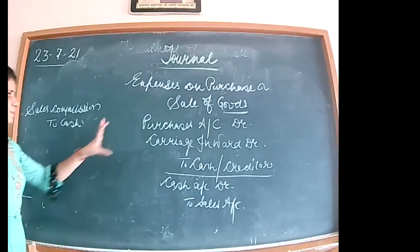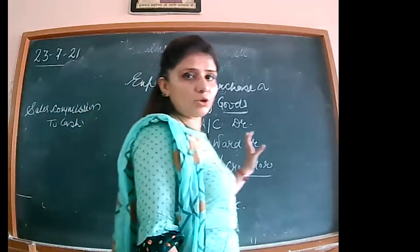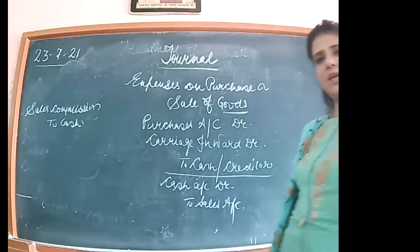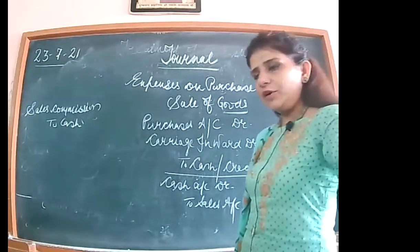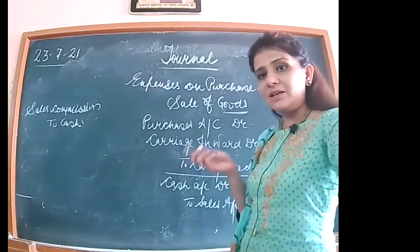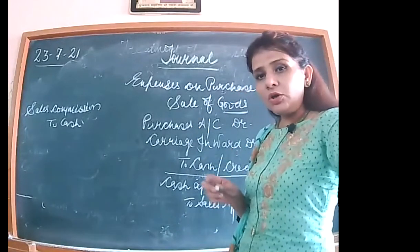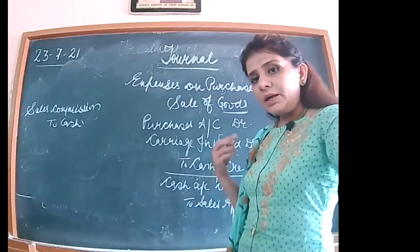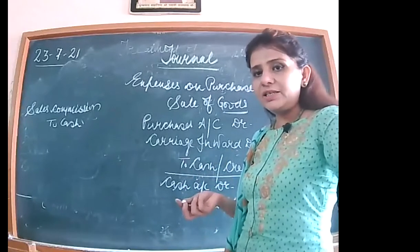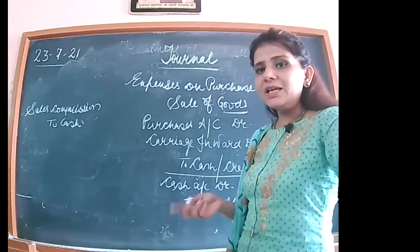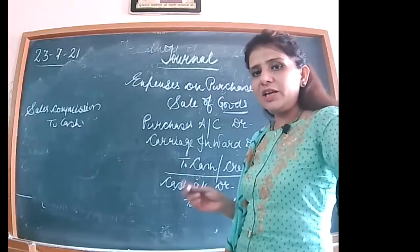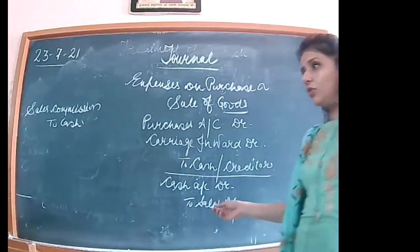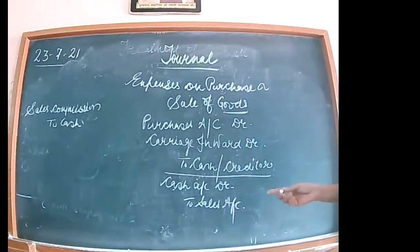In the first entry I have merged both. If the same entry is being passed whereby two or more accounts are debited or credited simultaneously, then that entry in accountancy we call a compound entry.